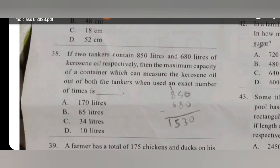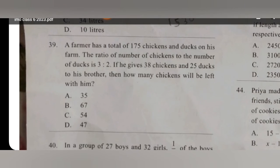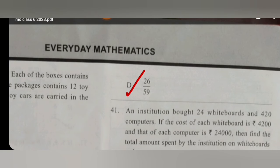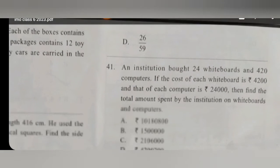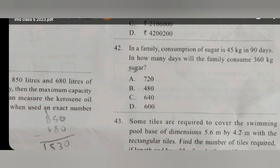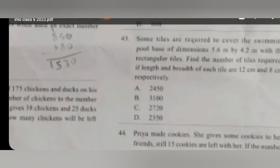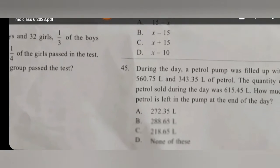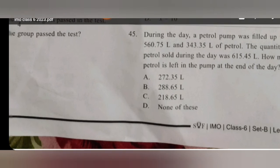For question number 35, option B. For question number 36, option C. Now question number 37, option is D. Now question number 38, option is A. Now question number 39, option is B. Now question number 40, option is D. Now question number 41, option is A. For question number 42, option is A. For question number 43, option is C. Question number 45, option is B.